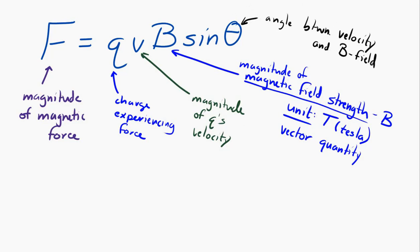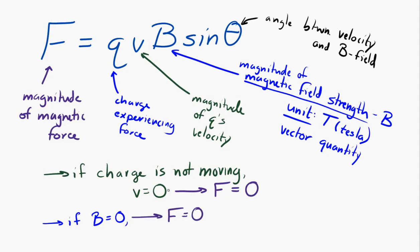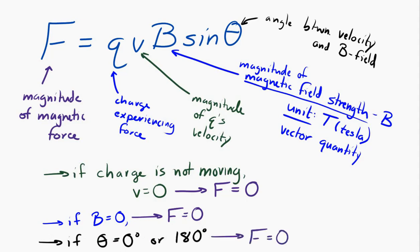Notice that if the charge is not moving, that means V is equal to zero, and there's no magnetic force. And also it needs to be in a magnetic field — if the magnetic field strength is zero, then there's no magnetic force. And of course if there's no charge, there's no magnetic force. And that is also the case if theta is equal to zero degrees or 180 degrees — if the velocity and the magnetic field are either in the same direction or in opposite directions, then there's no magnetic force.